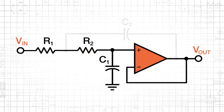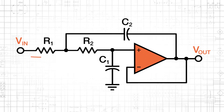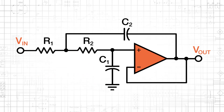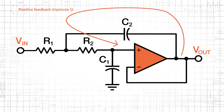If we ignore the positive feedback path, the circuit is a second-order RC low-pass filter connected to a voltage follower. High frequencies are shorted to ground, and low frequencies are passed to the input of the op-amp, and the op-amp buffers the output of the filter. At frequencies near the cutoff frequency, the impedance of the capacitors is comparable to the resistance of the resistors, and the positive feedback path provided by C2 allows the circuit to generate the higher Q type of response that we expect from resonance-based filters.